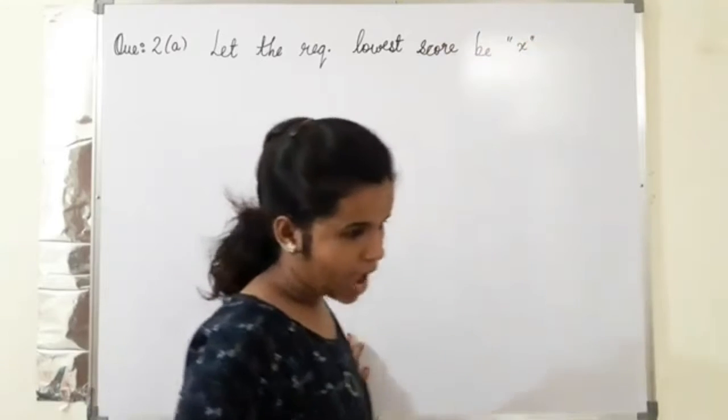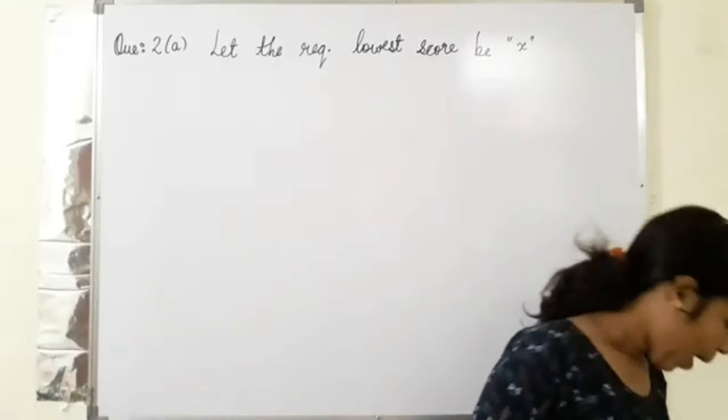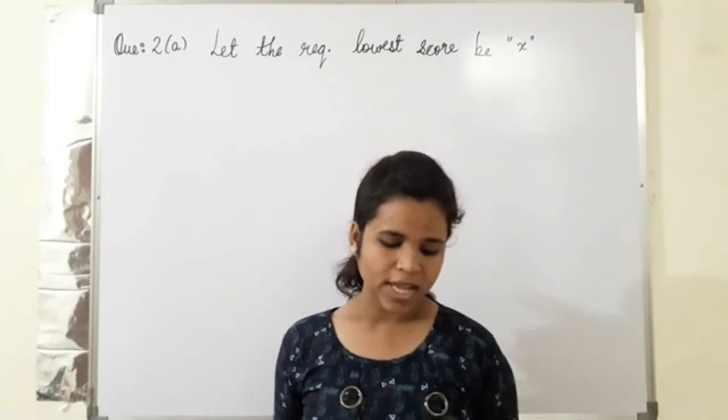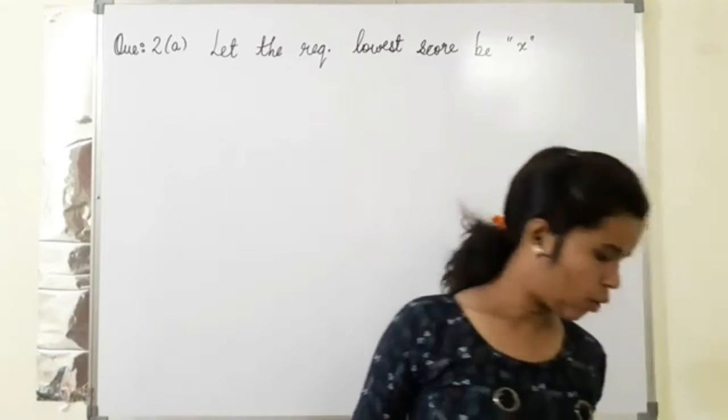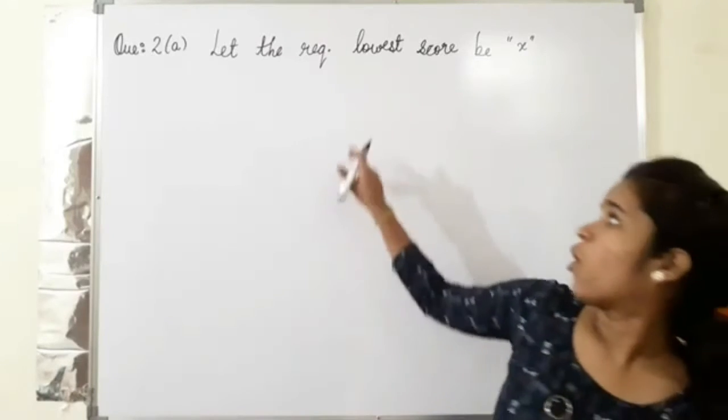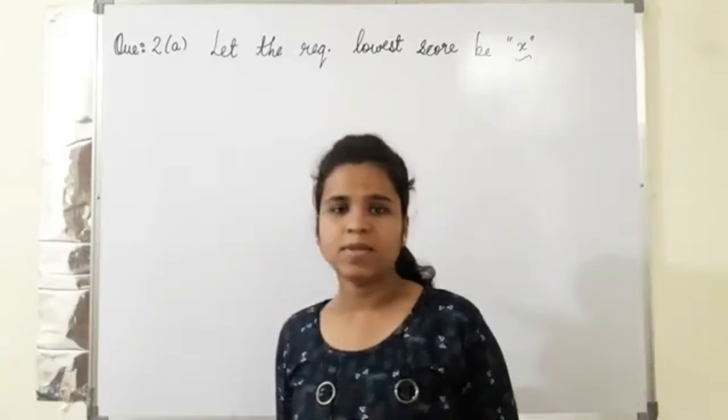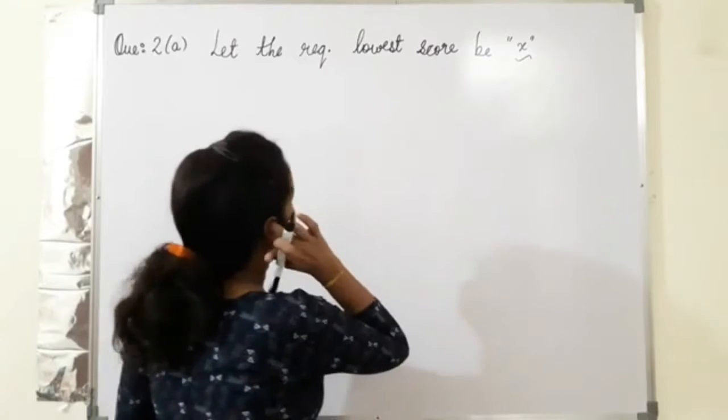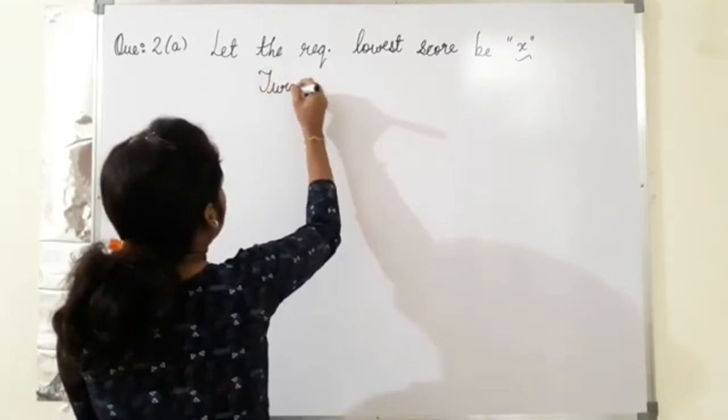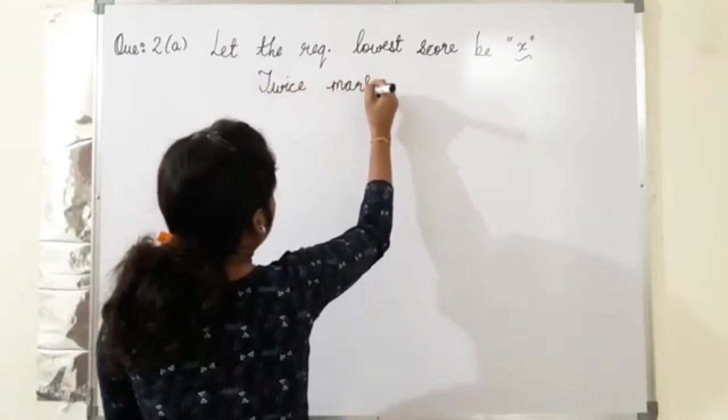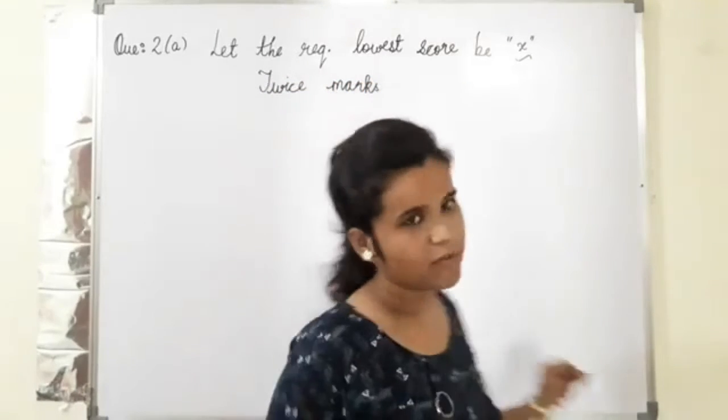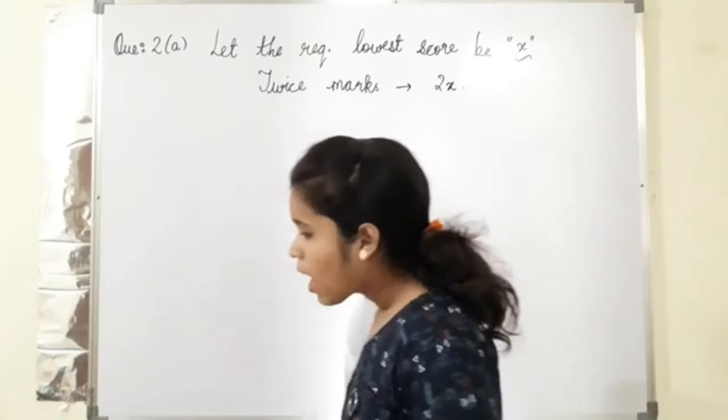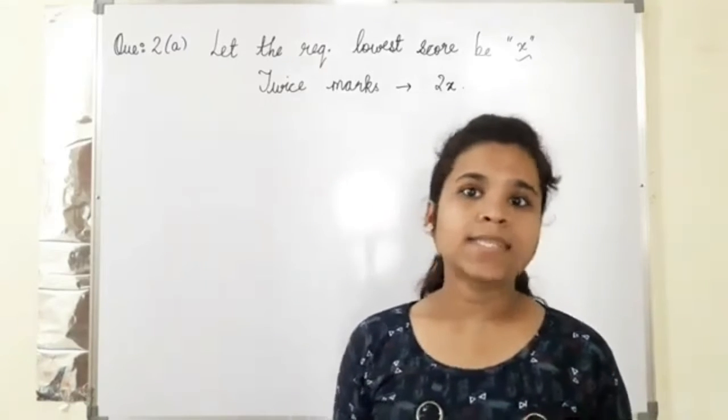The class highest is how much? It is 2 times. The class is twice the lowest marks plus 7. So 2x, if you add 7 to it, the lowest score will be x, but the condition is it's twice. The twice marks will be written as 2x.